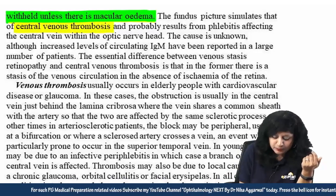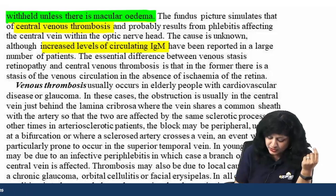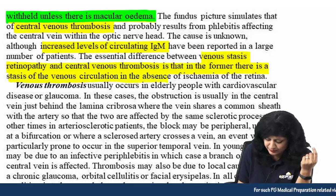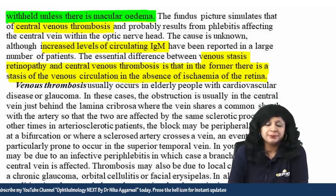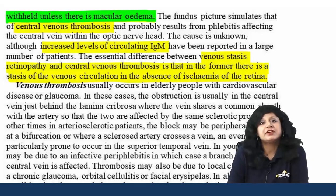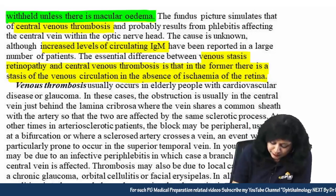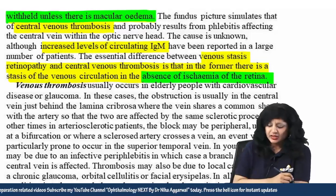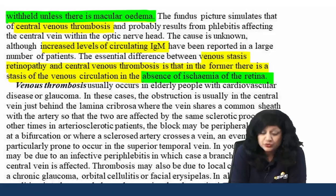The essential difference between venous stasis retinopathy and central venous thrombosis is that in the former, there is stasis of the venous circulation in the absence of ischemia of the retina. An important clue in the question may be elevated IgM levels. In both conditions there is stasis, but in venous stasis retinopathy you will not have ischemia of the retina.